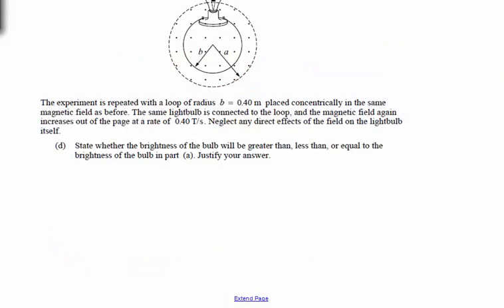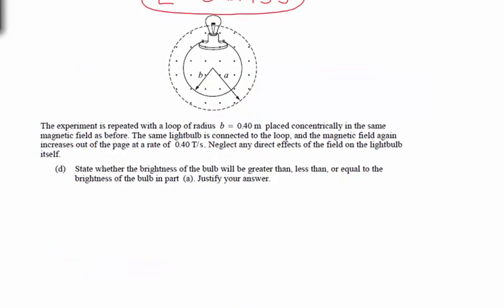The final part has the exact same situation — same magnetic field — but now the loop has a radius of only 0.4 meters. The same light bulb is connected, and the magnetic field is still increasing out of the page at 0.4 teslas per second. The question asks whether the brightness of the bulb will be greater than, less than, or equal to before. The key is that brightness depends on the current: bigger current means brighter, smaller current means dimmer, so we need to look at how the current changes.